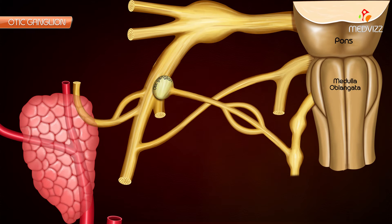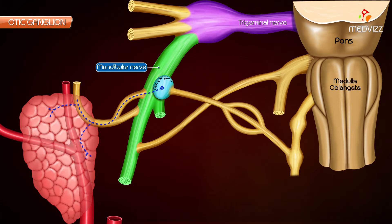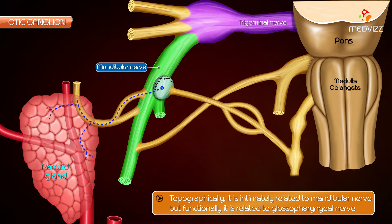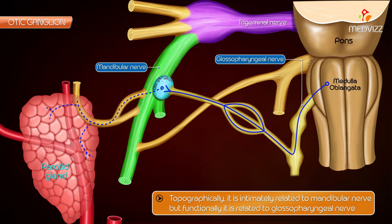Otic ganglion. This is a small parasympathetic ganglion which is connected to the mandibular division of the trigeminal nerve. It provides a relay station to the secretomotor fibers of the parotid gland. Topographically, it is related to the mandibular nerve. However, functionally, it is related to the glossopharyngeal nerve.